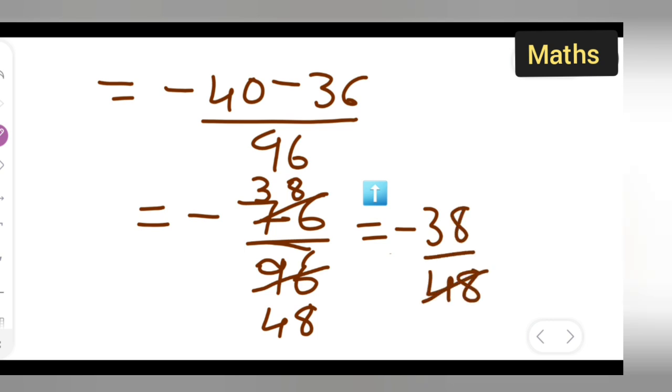We can again cancel this. 2 times 2 are 4, 2 times 4 are 8. 2 times 1 are 2, 2 times 9 are 18, carry 1 is there. So the answer will be -19 upon 24.